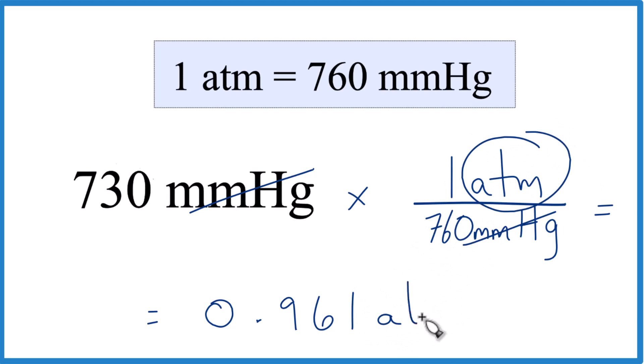That's what's left, atm. So in answer to our question, 730 millimeters of mercury, that equals 0.961 atmospheres.